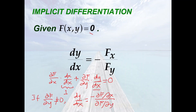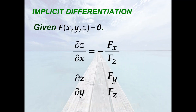Notice that this result is just the same as the formula stated earlier — please remember this formula. Now we assume that z is given implicitly as a function of both x and y by an equation of the form f(x, y, z) = 0.